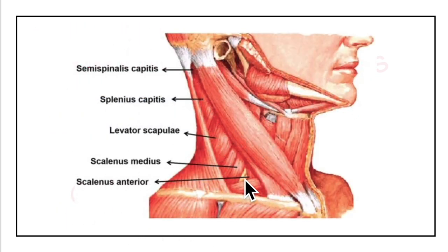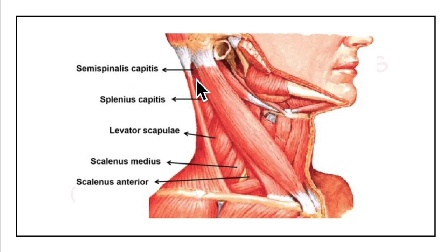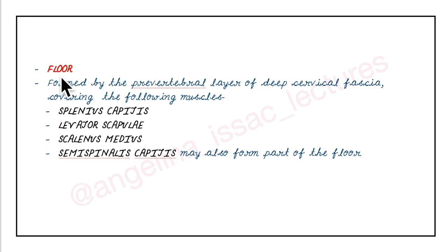Now let's look at the floor of the posterior triangle of the neck. The floor is formed by the pre-vertebral layer of the deep cervical fascia, and it covers the following muscles: semi-spinalis capitis, splenius capitis, levator scapulae, and scalenus medius.